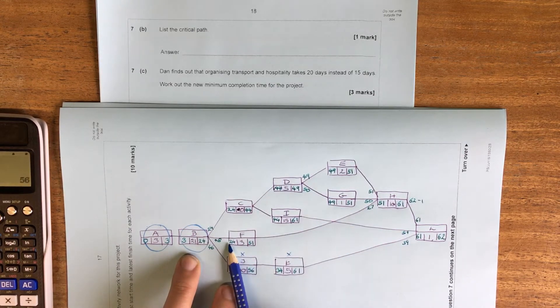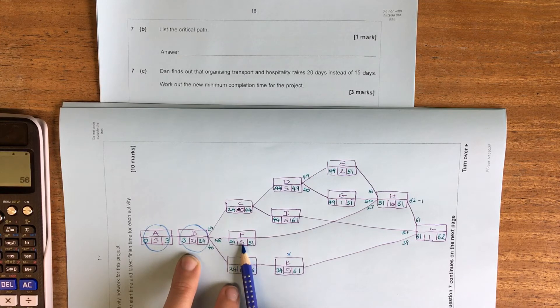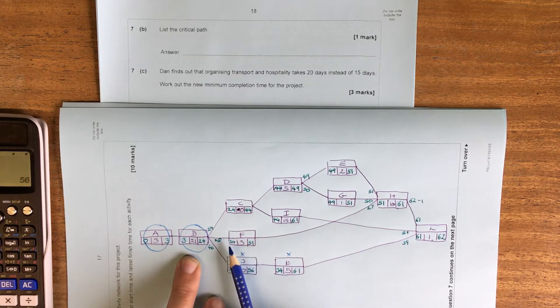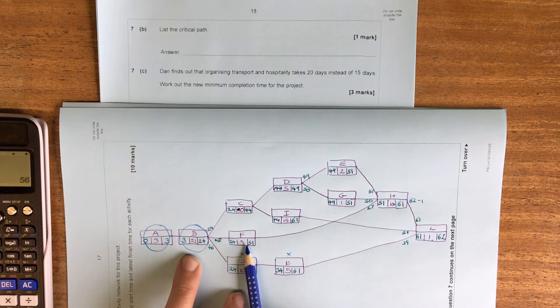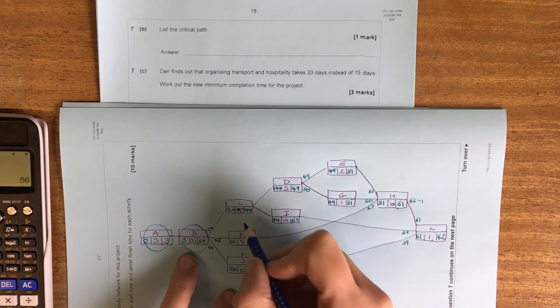So F can start at 24, takes 3, needs to be finished by 51. So this could be finished by 27. So this one's not critical.